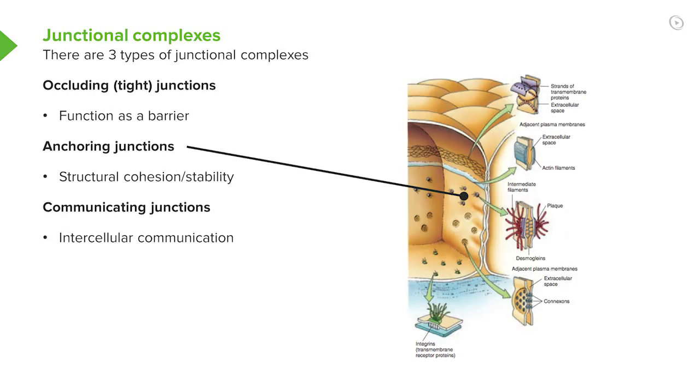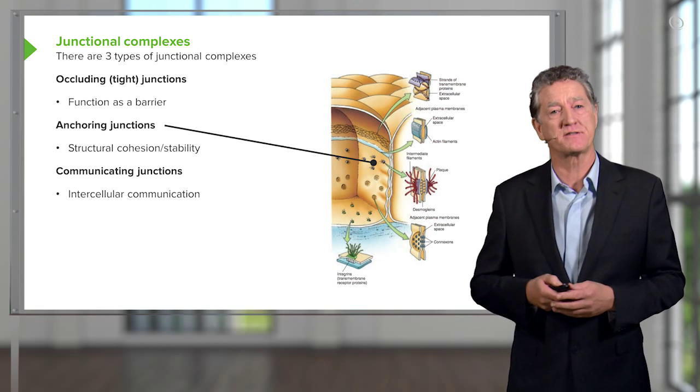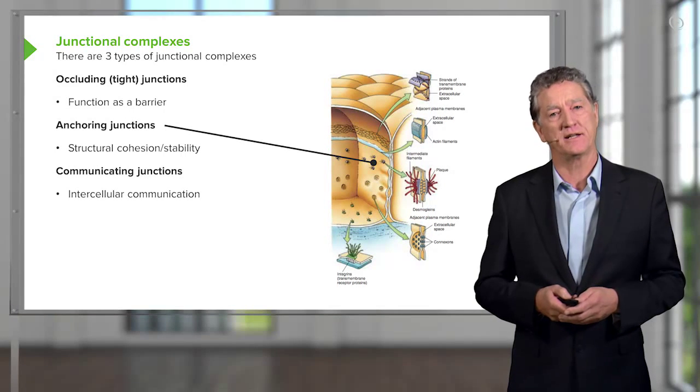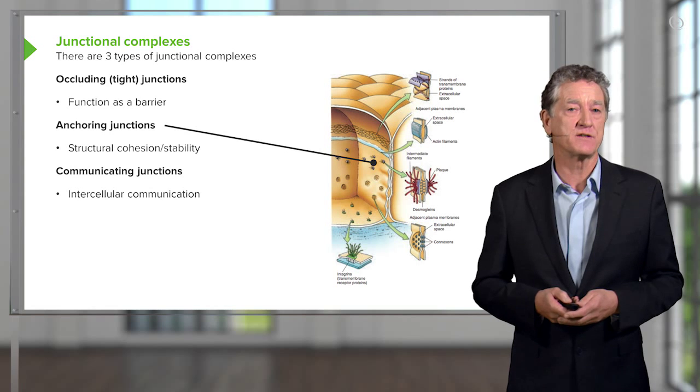The other type of anchoring junction is the desmosome or macular adherents. These are little spot junctional complexes, spot welds if you like. And they attach to the intermediate filaments of the cytoskeleton of one cell and also to another cell. So these anchoring junctions link the cells together so that the epithelium acts as a cohesive unit.